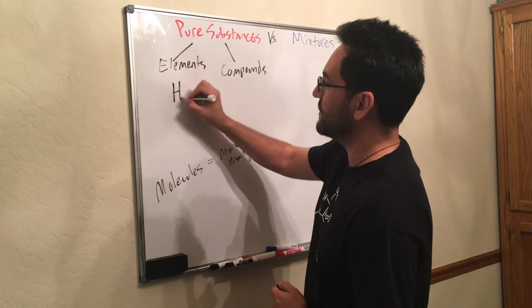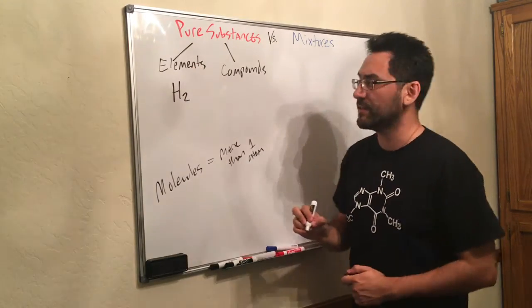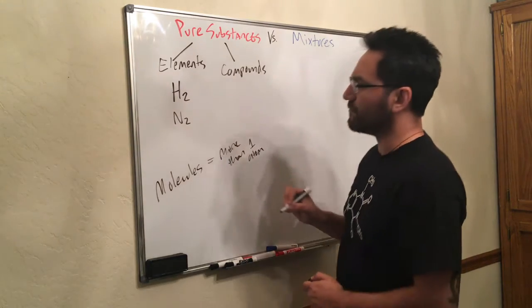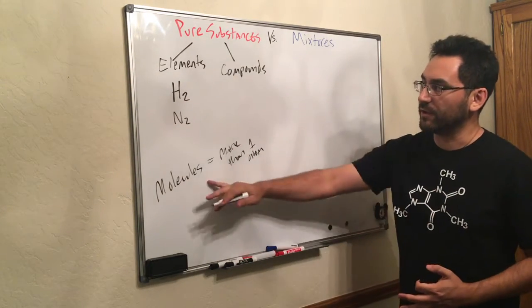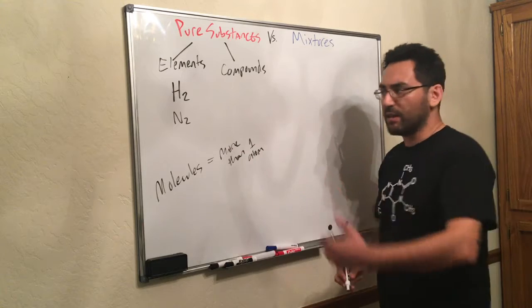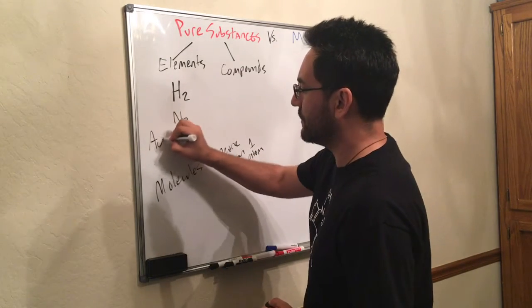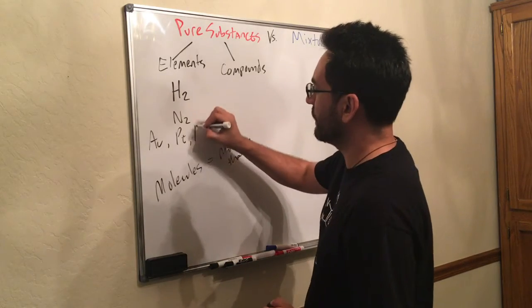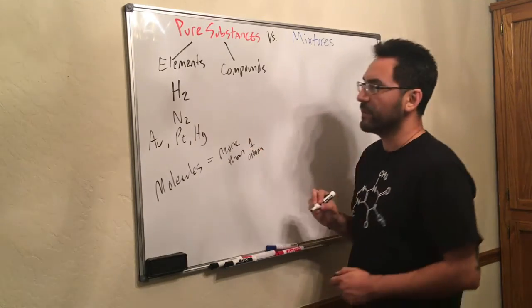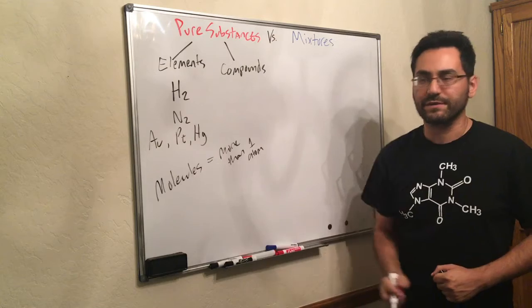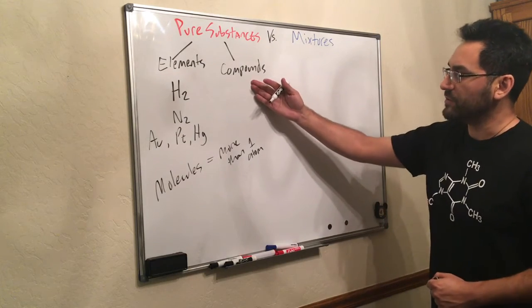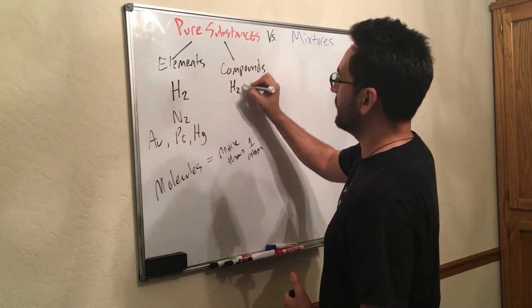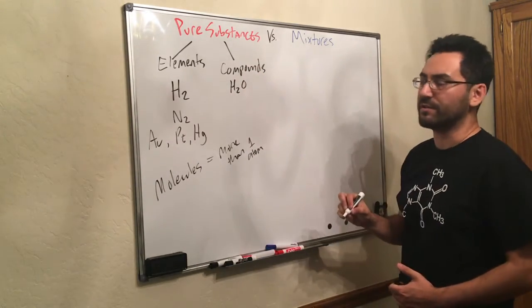A molecular element such as hydrogen gas or nitrogen gas. Now these are molecular elements, but other elements also qualify like gold or platinum or mercury. These would all be pure substances. Now compounds are more than one kind of atom. So things like water, two hydrogens and an oxygen.